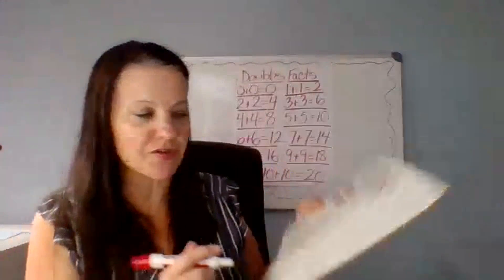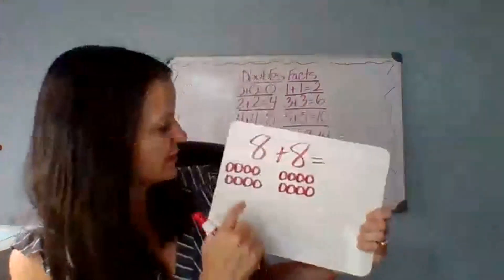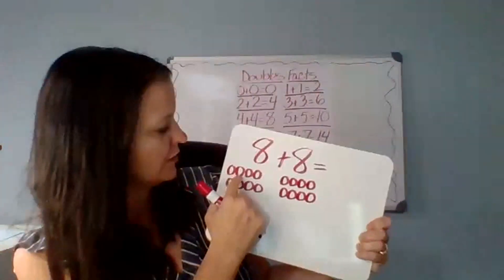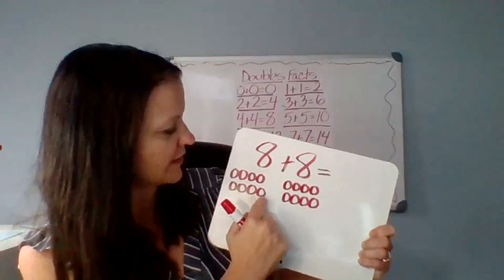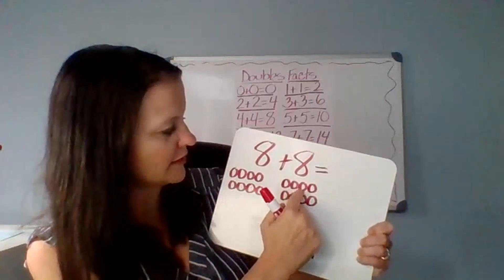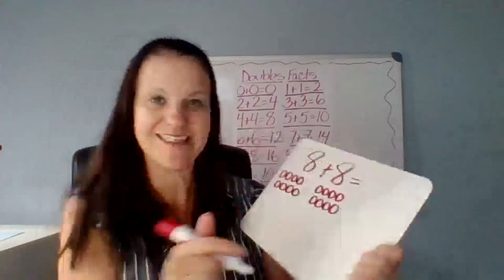I need to draw eight more circles: one, two, three, four, five, six, seven, eight. Let's count them up together: one, two, three, four, five, six, seven, eight, nine, ten, eleven, twelve, thirteen, fourteen, fifteen, sixteen. My answer is sixteen.